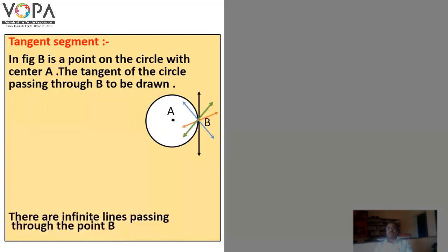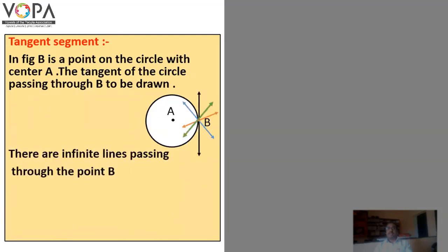There are infinite lines passing through point B on the circle. One question: which of them will be the tangent?